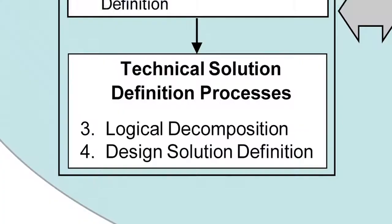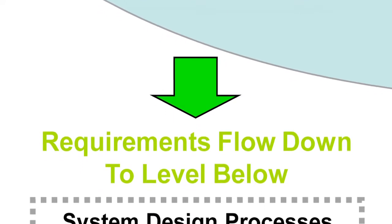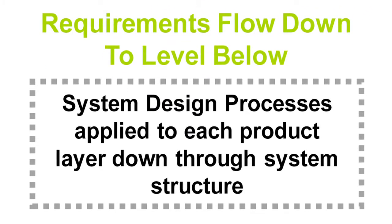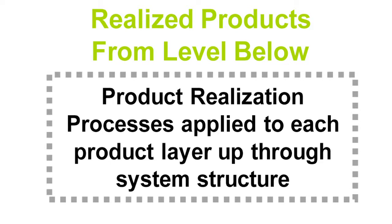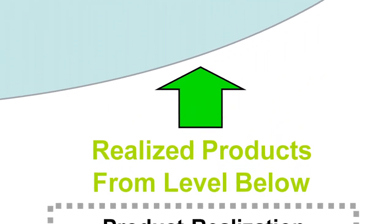Steps three and four take those requirements and go into lower and lower levels of detail about the functions that need to be performed, the systems and subsystems and components needed to perform those functions, and lay all that out in a hierarchy. As you finish up this system design process leg of the engine, you scoot over to the bottom of the other side — the product realization processes leg — and you walk up that leg.